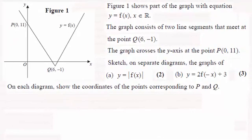Hi there. Now for part B of this question we've got to sketch on separate diagrams this graph y equals 2 times f of minus x and then plus 3 and state the coordinates, the corresponding coordinates of the points P and Q under the transformation.